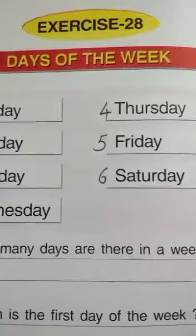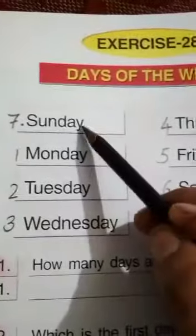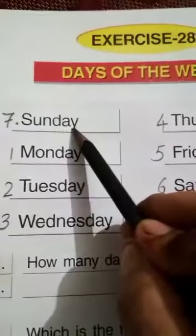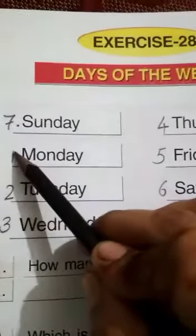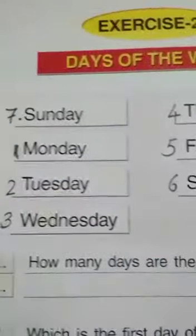Now turn to page number 30, exercise 28, days of the week. Here, first day of the week is written Sunday, but Sunday is the last day of the week. So start from Monday. Monday is the first day of the week. In your notebooks, write down like this.